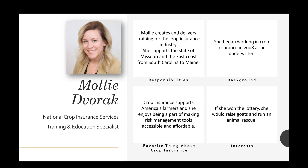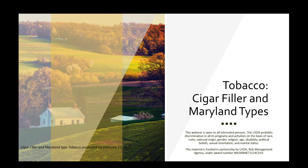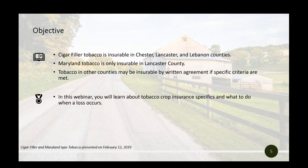Let's get started. We're going to talk today about tobacco — the cigar filler and Maryland types, which are available in Pennsylvania. We're going to go through the specifics of the tobacco crop insurance policy as it applies to the cigar filler and Maryland types. In this webinar, you'll learn about tobacco crop insurance and what to do when a loss occurs. I expect today's webinar to last about a half an hour.